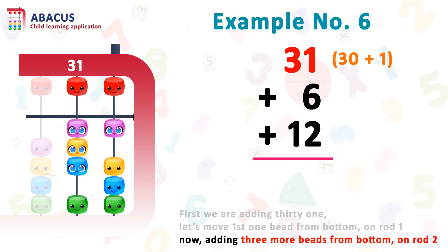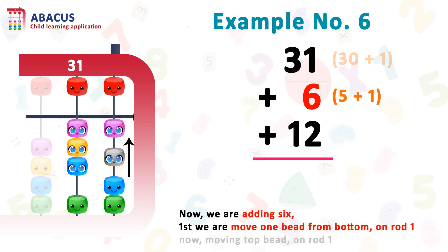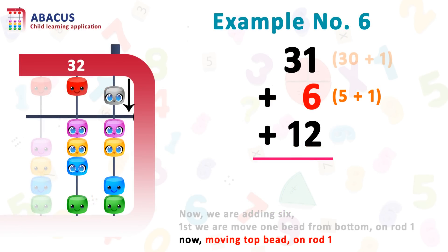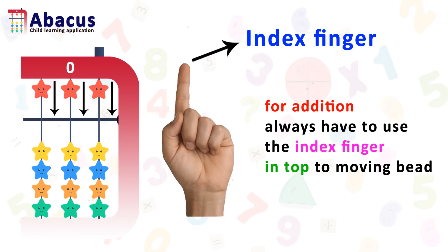Now we need to add 6. So for 6, on rod 1, we have just 1 bead, so we can add easily. So first, we are moving 1 bead from bottom to top below the beam on rod 1 using the thumb. Now move the top bead to downward above the beam on rod 1 using the index finger.